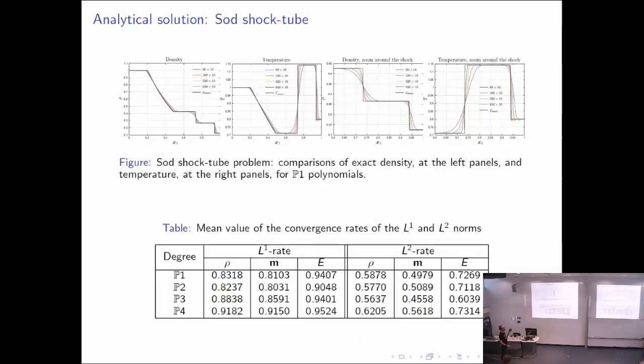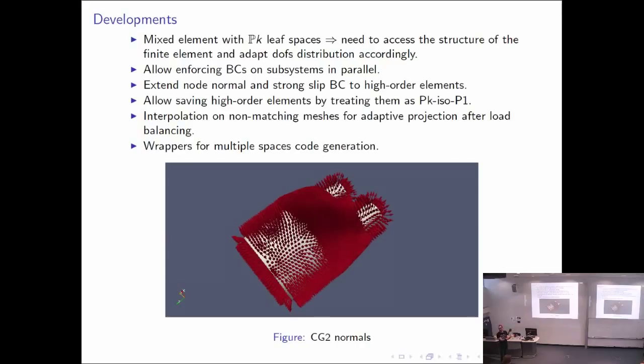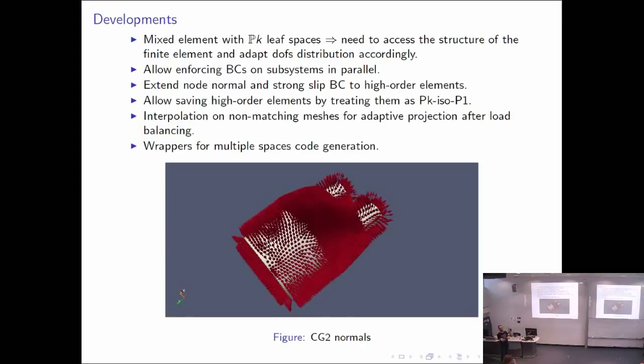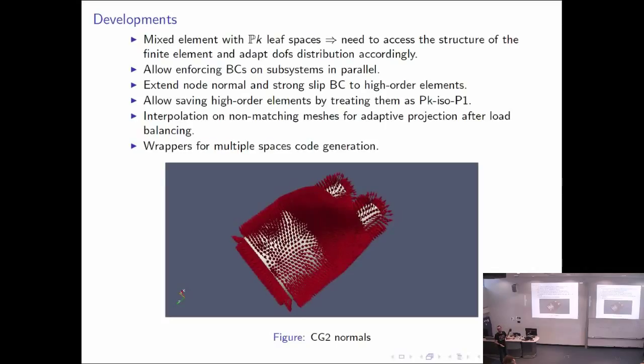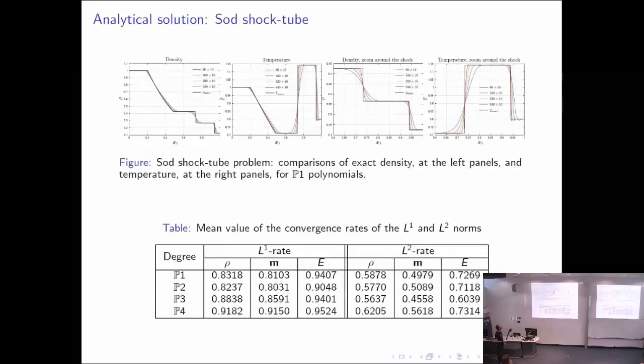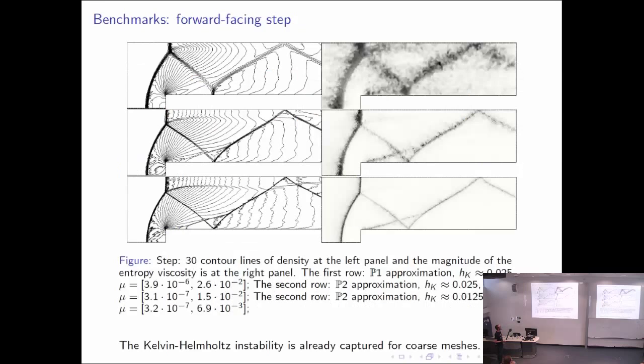This actually demanded to develop the subsystem thing, mixed element stuff in Dolphin HPC, everything in parallel. Rewrite slip BC to support higher order elements, and since we cannot save higher order elements to VTK, write some general interpolation functions that I wrote on non-matching meshes, so we're safe for the future. We need to extend the normals. For slip BC, we need to build finite element fields representing the normal and the basis made of the tangential vectors as well.